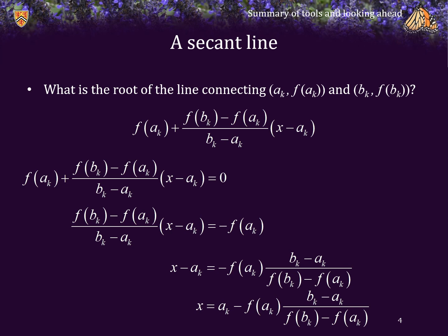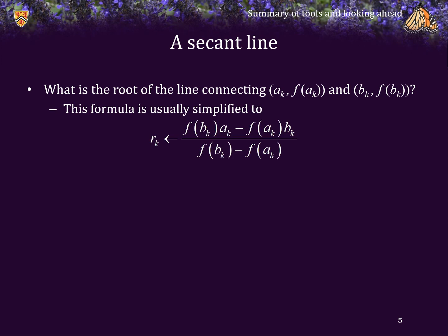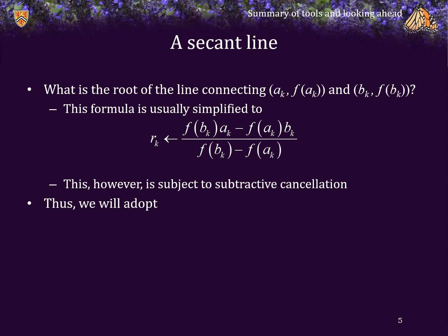It makes no difference if f at a sub k and f at b sub k are equal. You can manipulate that root formula further to get the following alternative expression. The problem with this formula is you don't really know how the product of f at b sub k and a sub k minus the product of f at a sub k times b sub k are going to interact, so there's a possibility that subtractive cancellation may occur. Consequently, we'd rather avoid subtractive cancellation, so instead we're going to use the formula found on the previous slide. We will adopt the root being that expression.